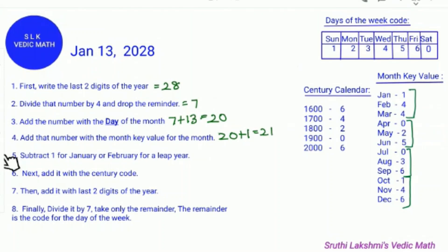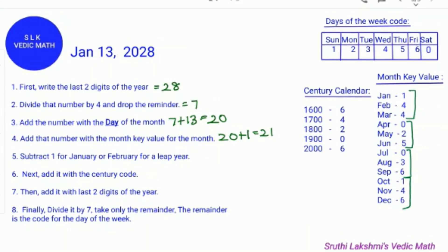Next, it says to subtract 1 for January or February in a leap year. What is a leap year? In a leap year, there are 366 days, but in a normal year there are only 365 days. In a leap year, the month of February has 29 days, while in a normal year February only has 28 days.